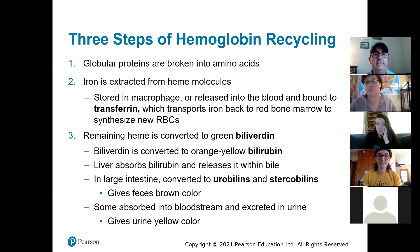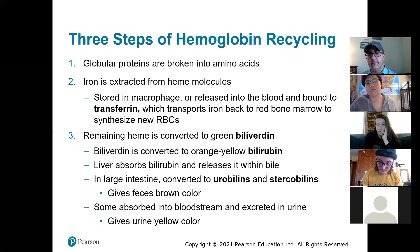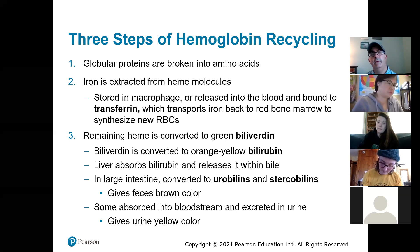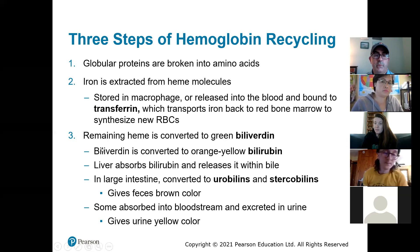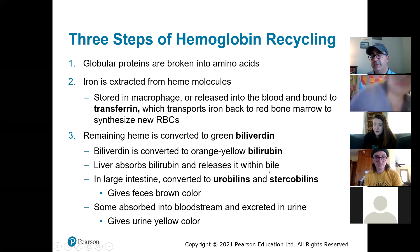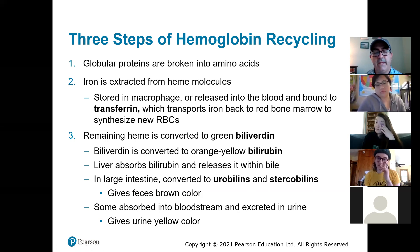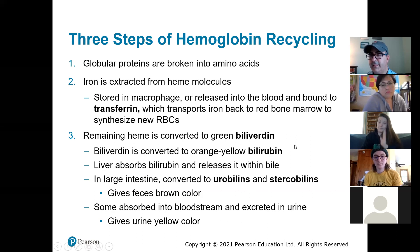Three steps of hemoglobin recycling: the red blood cells that are 120 days old get pulled apart and things like hemoglobin are reused. This is where people whose livers aren't functioning properly can become jaundiced. The hemoglobin is pulled apart, the remaining heme is converted to a green biliverdin, which is converted to an orange-yellow bilirubin. The liver absorbs that and releases it into the bile, which gets released into your digestive system to break down fats.